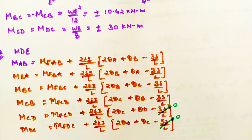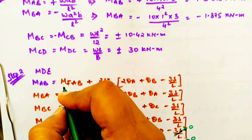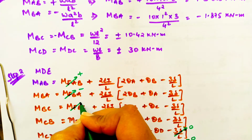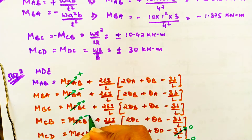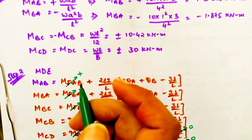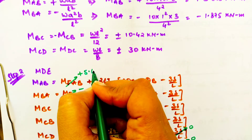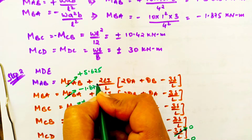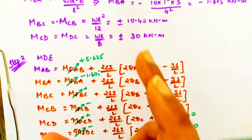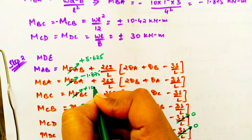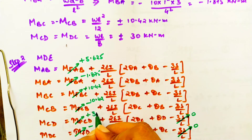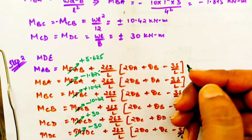Since CD has no deflection, δ = 0 is written there directly. We write all the values — EI, L, θ, fixed end moments, and the positive/negative signs — right into the equation so that chances of mistakes are less. Whatever values we have for EI, L, θ, and fixed end moments, we simply substitute all values into the equations.